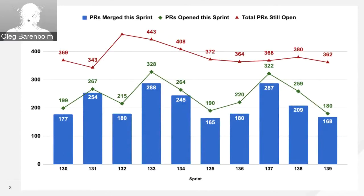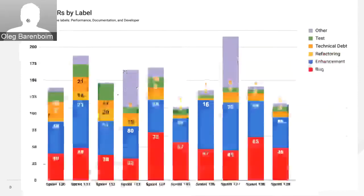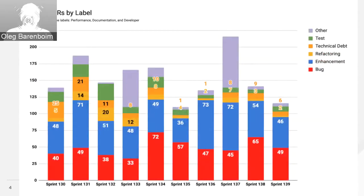This sprint we had a downward trend in the number of pull requests both opened and merged, while the ones that are still open are in a steady state. In terms of bugs versus enhancements, we're at about a 50-50 clip as we're stabilizing YANSA.